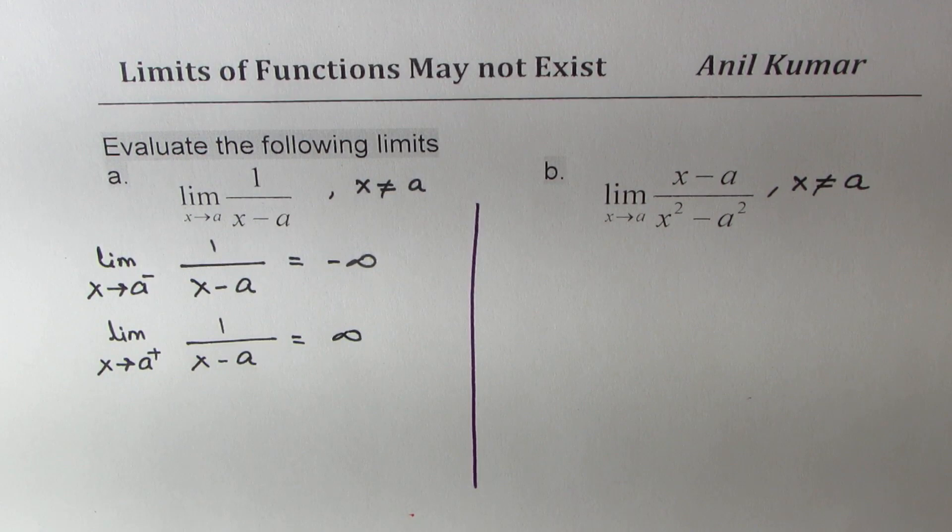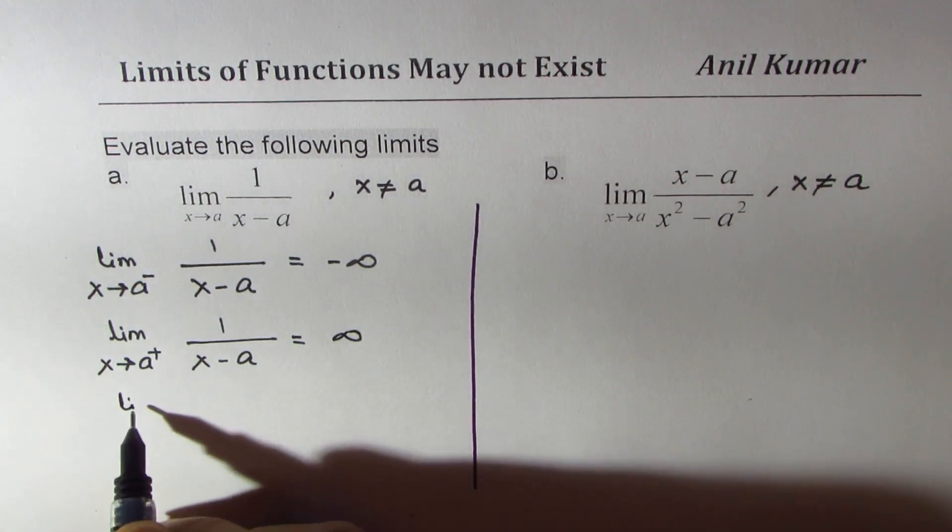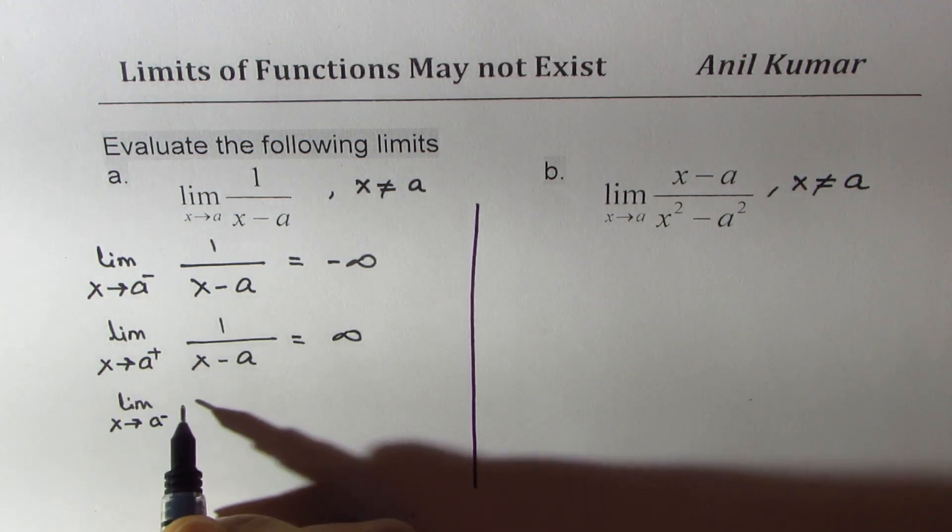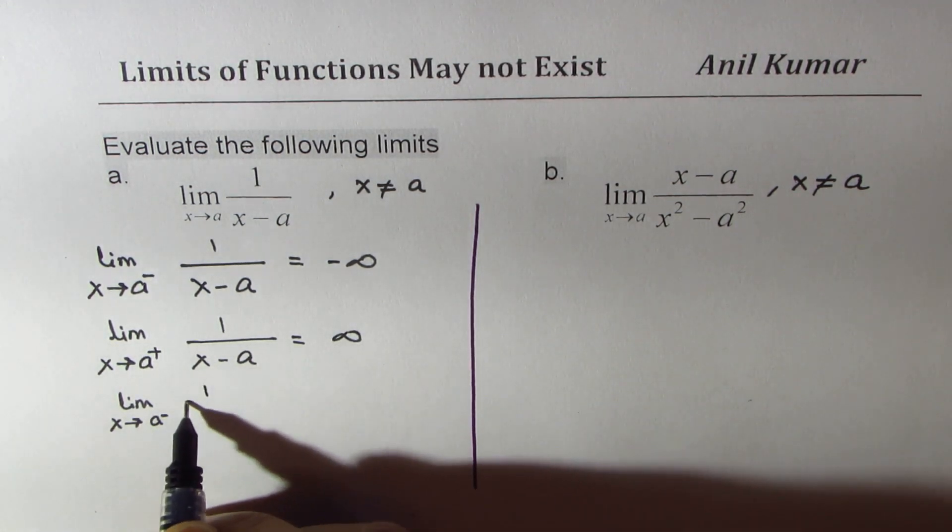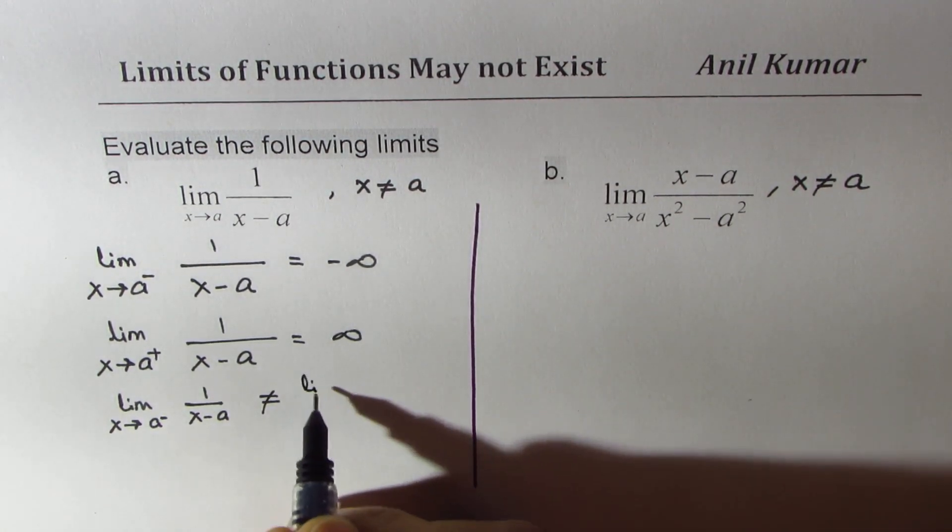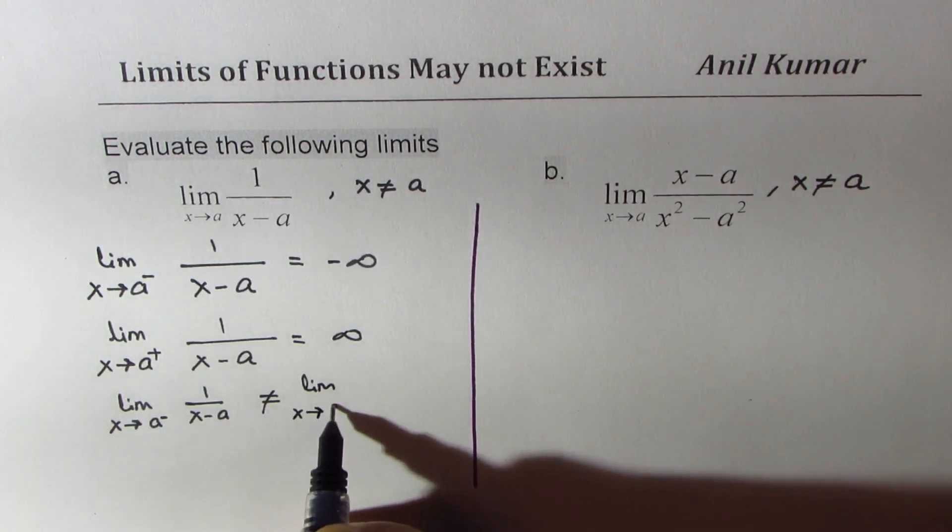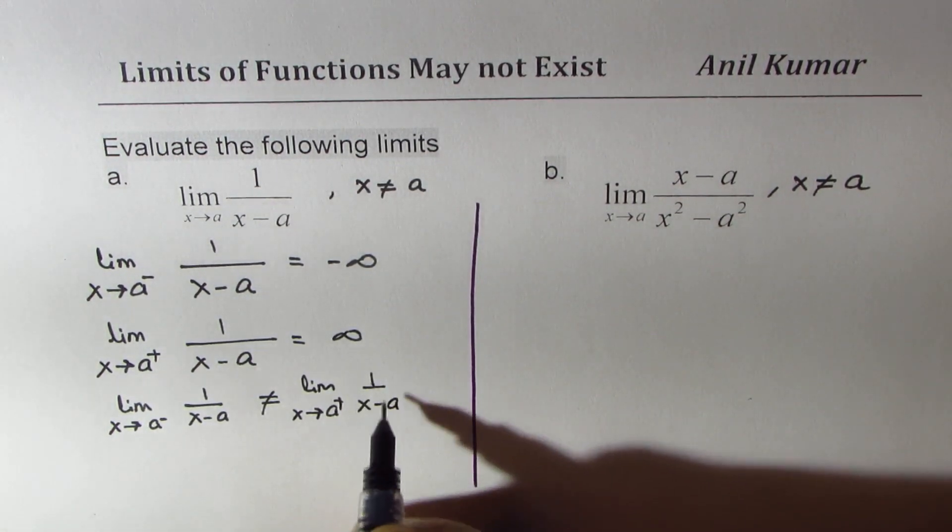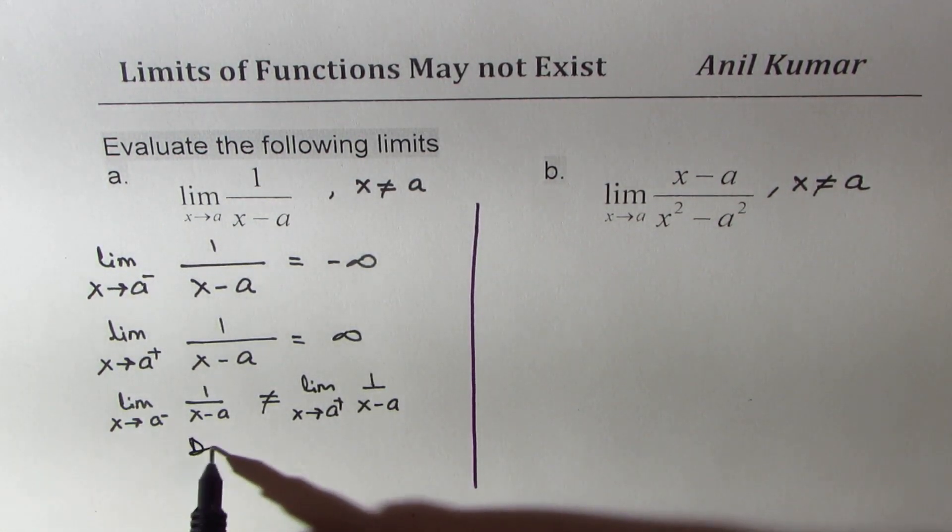Now, these two values, as you can see, are different. So we can say that limit x approaches a from the left side for the function x minus a is not equal to limit when x approaches a from the right side for this particular function. And so we say it does not exist.